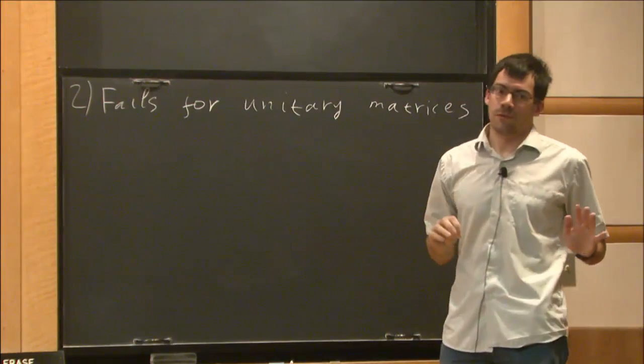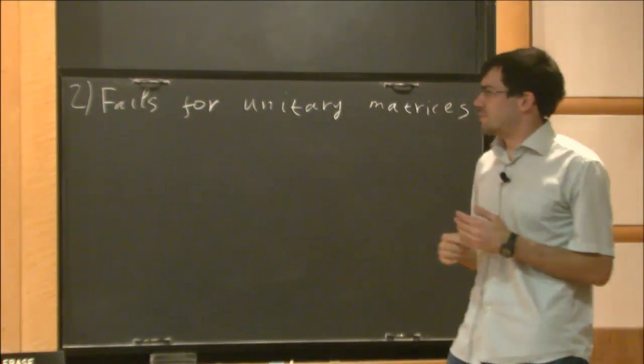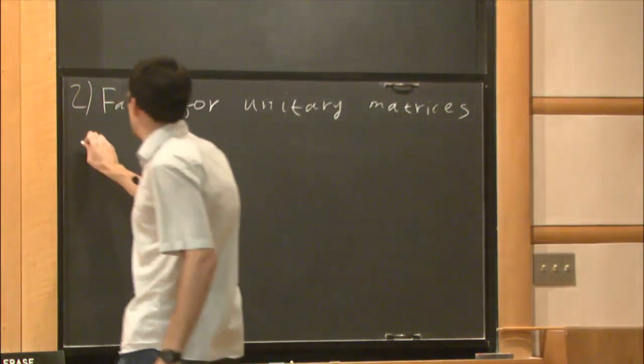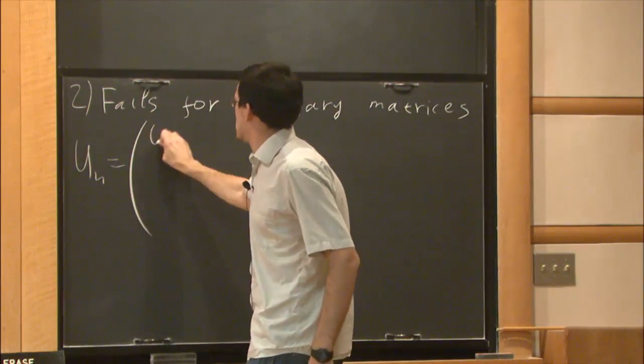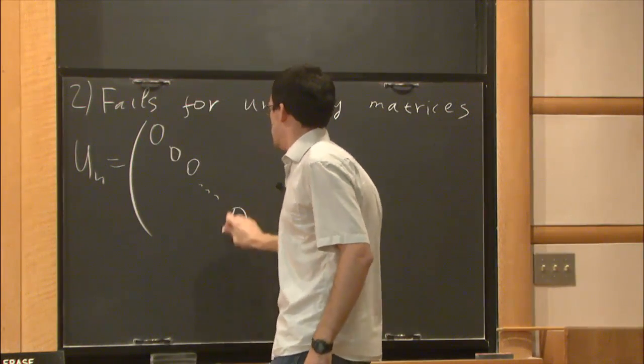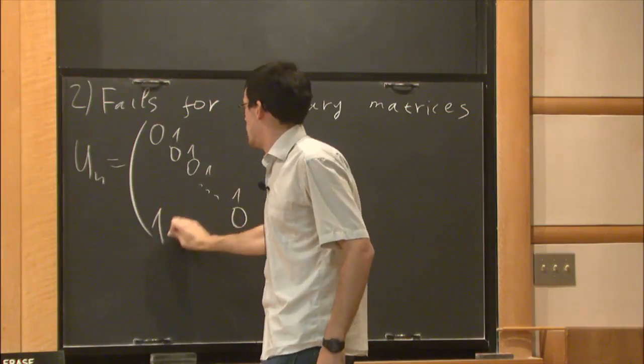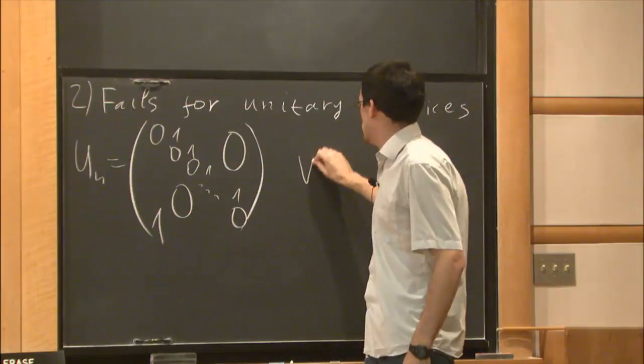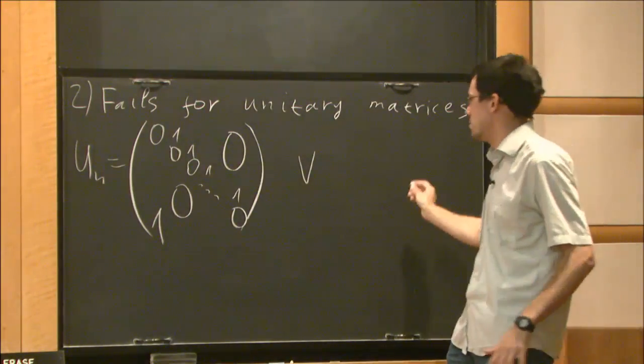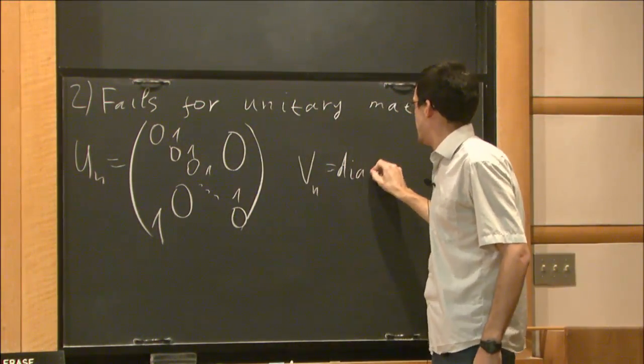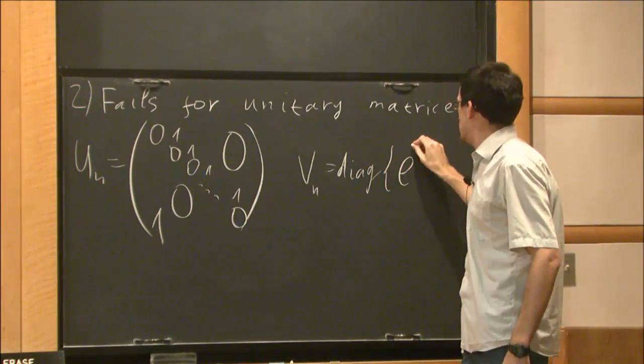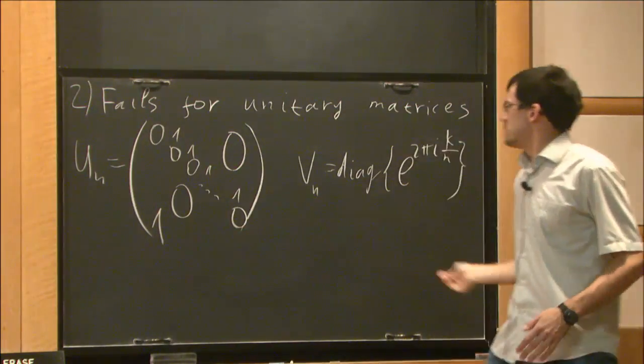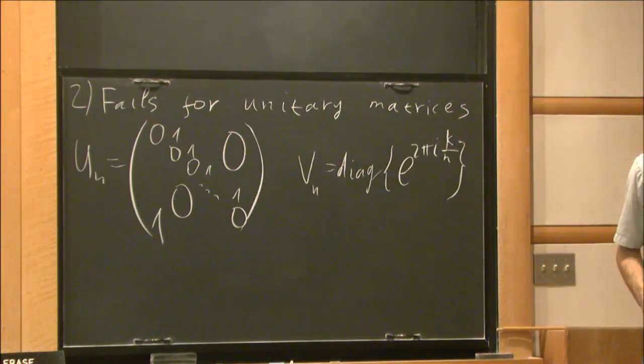Again, if you're looking for estimates independent of dimension. The counter-example is easy to write down, I think it's called Voiculescu's unitaries. u_n is just a cyclic permutation in n-dimensional space, and v_n is the discrete Fourier transform with diagonal entries e^(2πik/n).